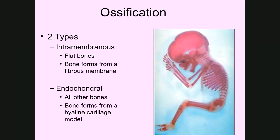In this video we're going to talk about ossification, which is the term we use for formation of bones. Looking at this picture of a fetus that is forming, this process of ossification actually begins in utero and starts at about eight to nine weeks of pregnancy. It's actually the formation of bone that causes us to go from calling a developing baby an embryo to calling them a fetus. The fetal stage begins when we start to see ossification happening.